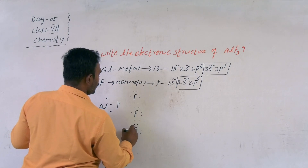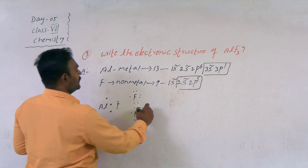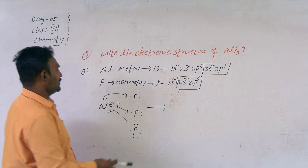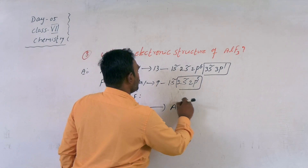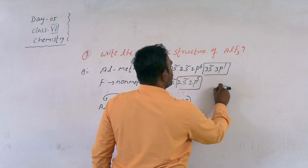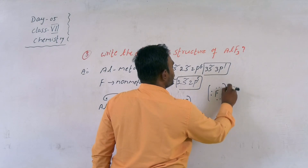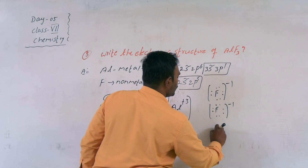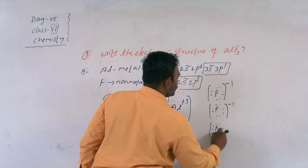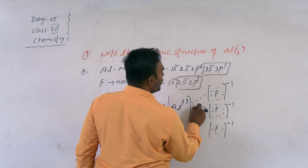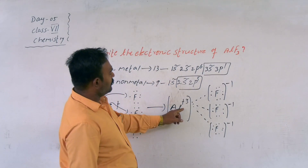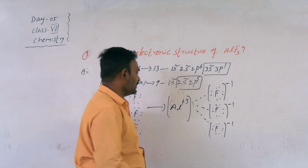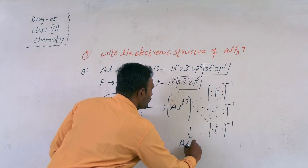Each fluorine atom gains 1 more electron from aluminium to complete its octet configuration. As a result, aluminium acquires a plus 3 charge and each fluorine acquires a unit negative charge. An electrostatic force exists between the cation and anion. The total positive charge is 3 units and total negative charge is 3 units (−1 + −1 + −1 = −3). The formula is AlF₃.